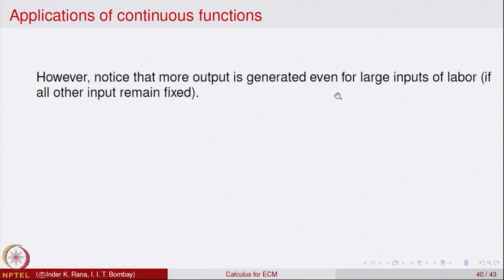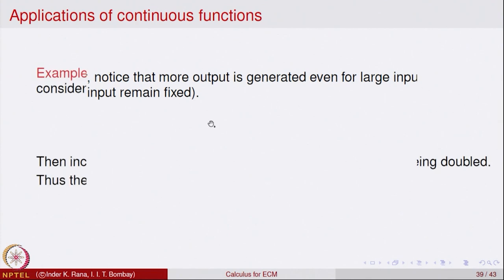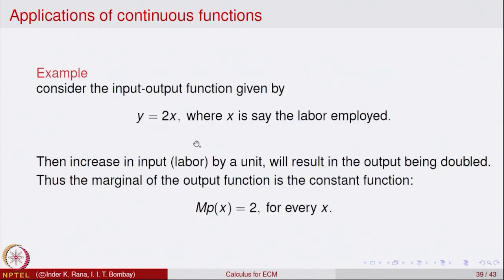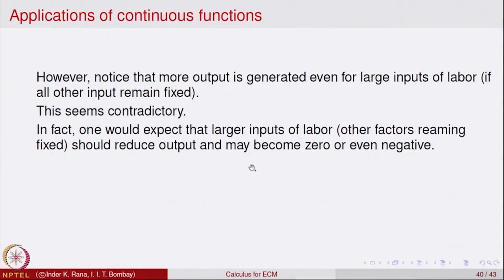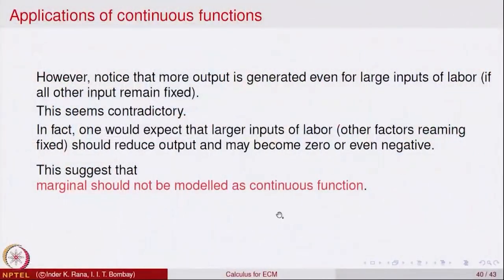However, note that in this model more output is generated even when large inputs of labour are applied while other factors remain fixed. This does not seem realistic — normally, increasing labour while keeping everything else constant does not keep increasing production indefinitely. In fact, one would expect that larger inputs of labour with other factors fixed should eventually reduce the marginal output. So marginals should not be modelled as constant continuous functions in general.